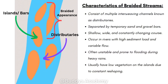Now, what are some characteristics of braided streams? They consist of multiple interweaving channels known as distributaries, separated by temporary sand and gravel bars. They are shallow, wide, and constantly changing course. They occur in rivers with high sediment load and variable flow, and they are often unstable and prone to flooding during heavy rains. Because of that, they usually have low vegetation on the islands due to constant reshaping.